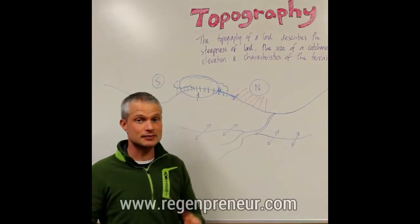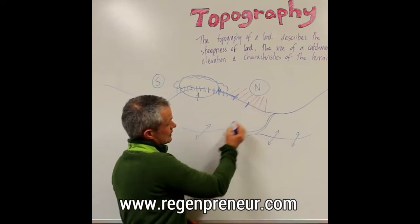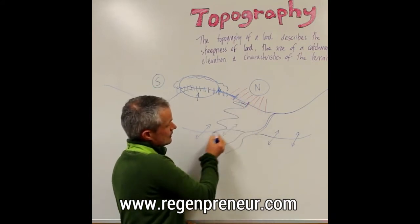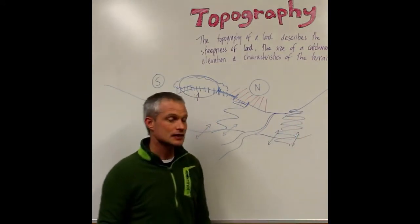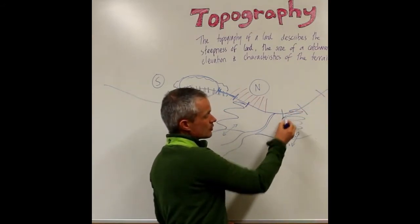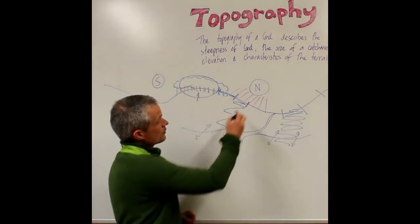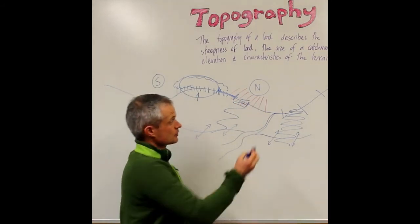And then in this mid zone here tends to be the most beneficial zone for agricultural production. So it's not too steep, it's got a moderate slope to it, and that moderate slope gives it good drainage.